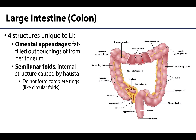Lastly, there are omental or epiploic appendages found throughout much of the large intestine. These are attached to the external surface and are fat-filled outpouchings of the peritoneum.